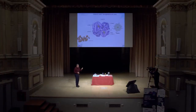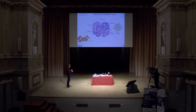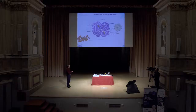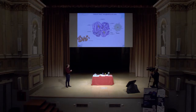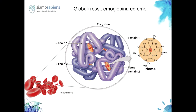Cerchiamo di capire com'è fatto un globulo rosso. Un globulo rosso fondamentalmente è pieno di una sostanza che si chiama emoglobina. Fondamentalmente è una proteina grossa, contenente quattro atomi di ferro in quattro posti distinti. Questi atomi di ferro sono capaci di agganciare l'ossigeno e veicolarlo dai polmoni ai tessuti, poi agganciano l'anidride carbonica e la riportano indietro.